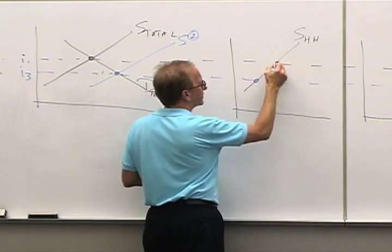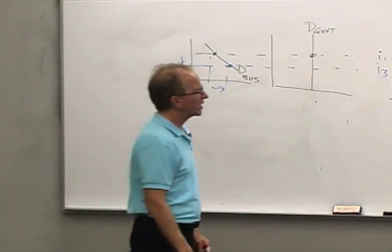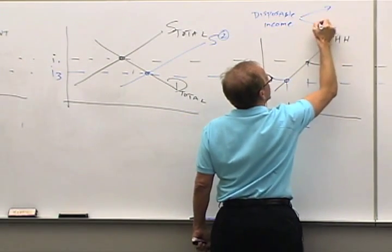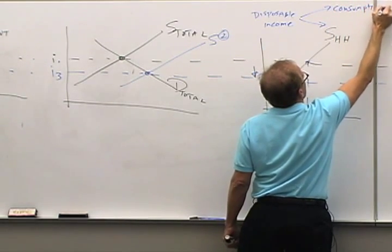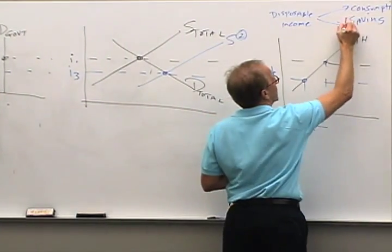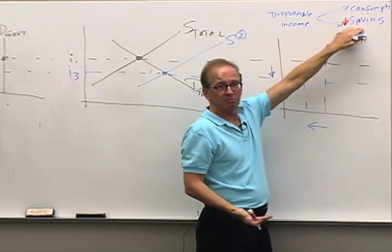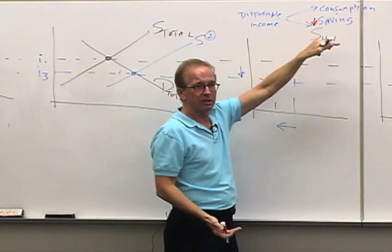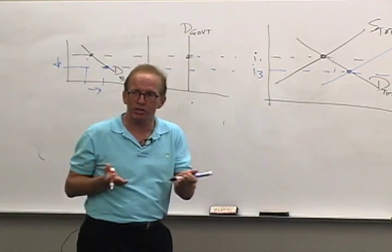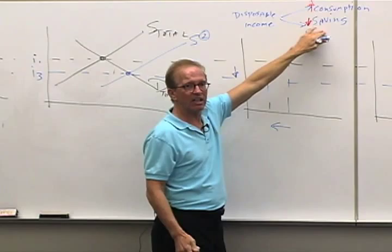With interest rates down, what do households do? Households respond by saving less. Here's disposable income — we've got two things we can do with it: consumption spending and saving. Interest rates went down so people save less. If you've got $100 in income and you were spending $95 and saving $5, if you now save only $3, you're saving less and you spend more. The interest rate doesn't change your income; it changes how you use that income — do you spend it now or spend it later? When that interest rate goes down, it says spend more now, save less now.